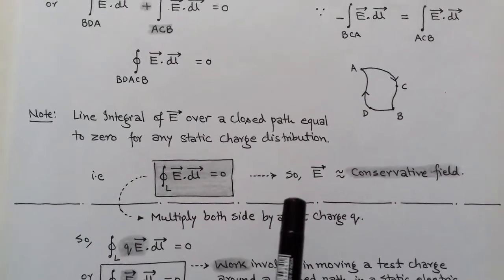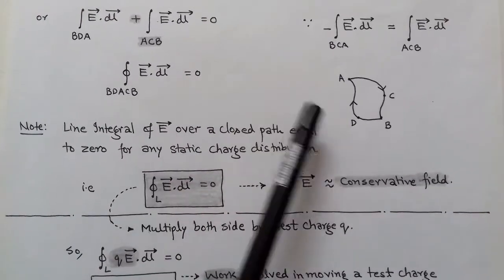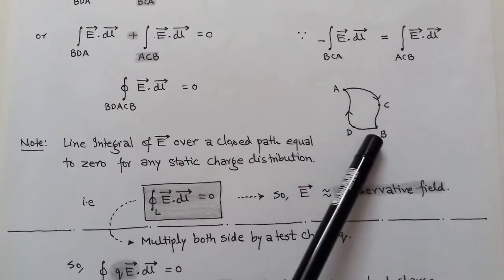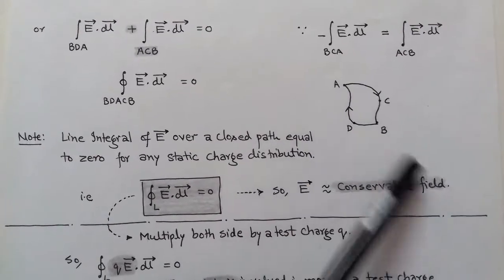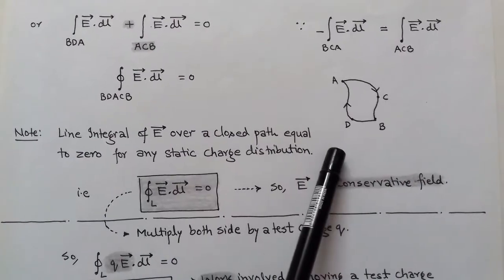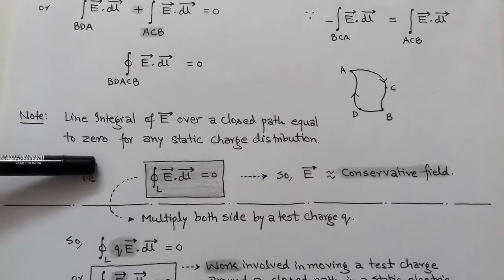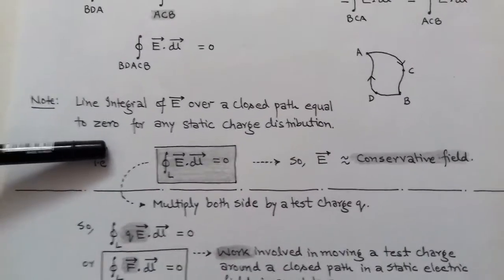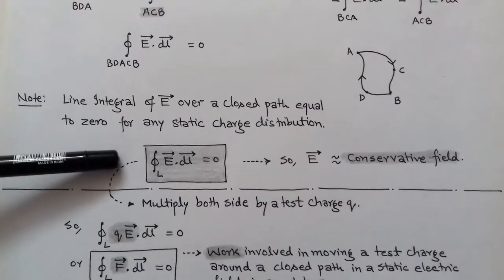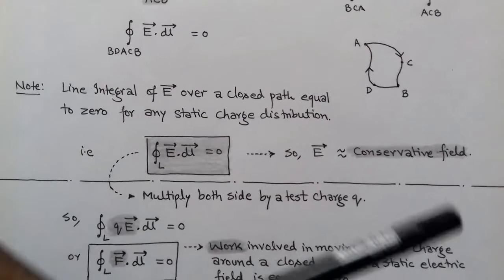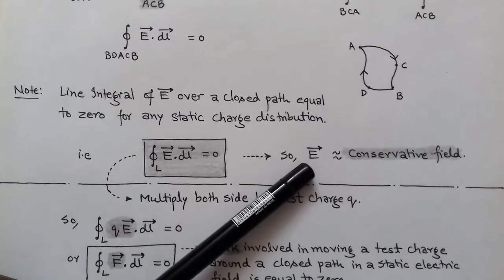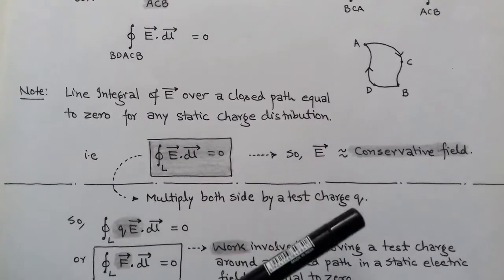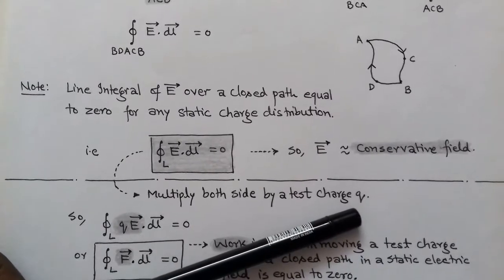This is the equation of potential difference in a closed path. As we move in a closed path, the potential difference between two points is equal to 0. We conclude that the line integral of electric intensity E over a closed path is equal to 0 for any static charge distribution. This tells us that the electric field is a conservative field.